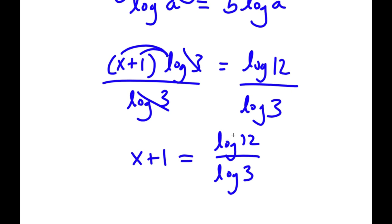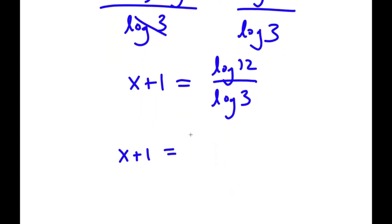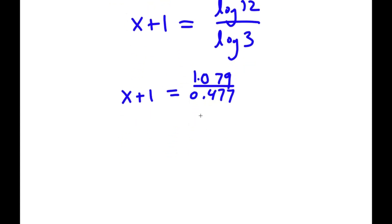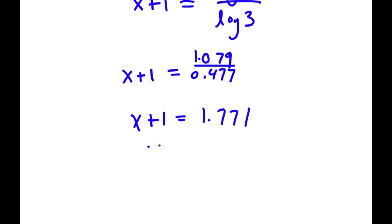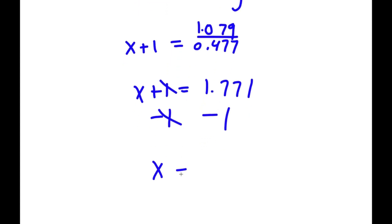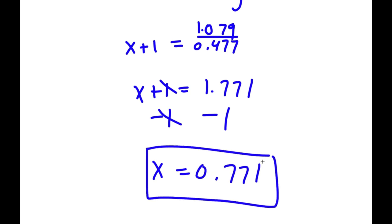So now I'm going to find the value of log 12 over log 3. Log 12 equals approximately 1.079, and log 3 is approximately 0.477. So I have 1.079 over 0.477, and if I divide those two, I get 1.771. Now I have x plus 1 equals 1.771, so I subtract 1 on both sides and get x is equal to 0.771.